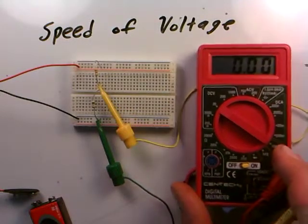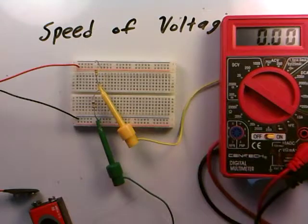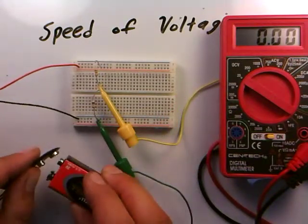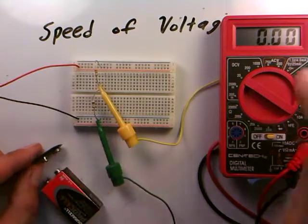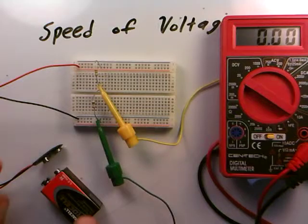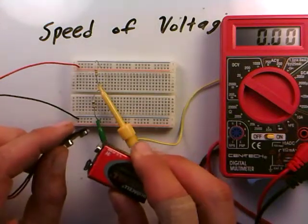But what we'd like to concentrate on now is how quickly, after I attach the battery to this circuit, how quickly will I see that half voltage appear on the voltmeter? That's the question we're going to ask. So here we go. I'm about to connect the battery. Watch the voltmeter.